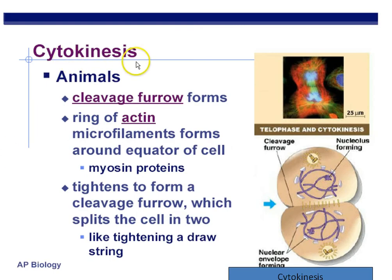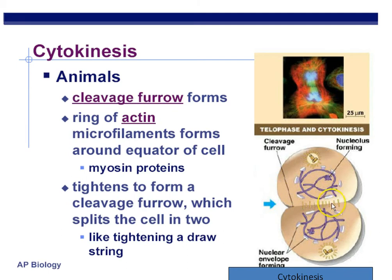In animals, cytokinesis produces something called a cleavage furrow — basically a pinching-off area caused by a ring of actin. Think of it as a little lasso tightening and eventually pinching the cell into two parts. These are phospholipids — the fluid mosaic model — kind of like a strong soap bubble being pinched off into two different cells. Actin is a microfilament, and it's the same actin used in muscle contraction with myosin.